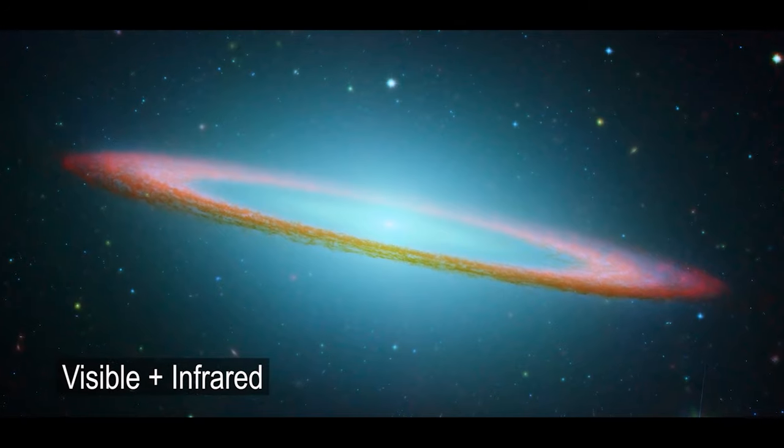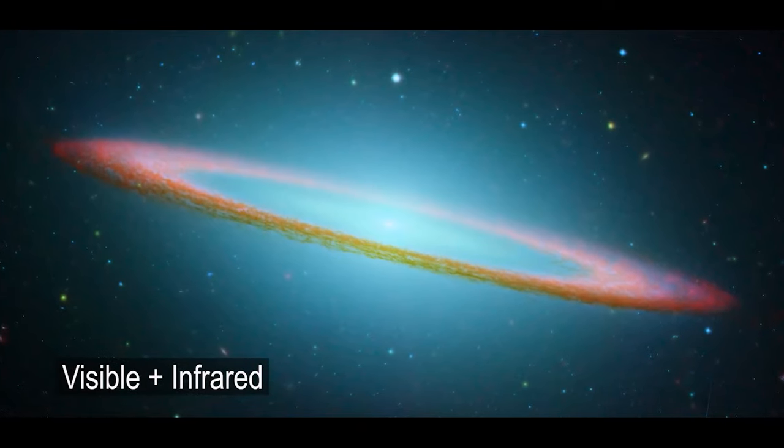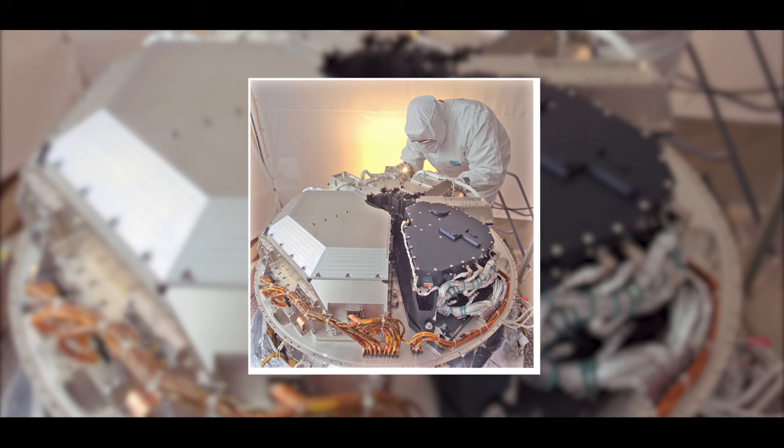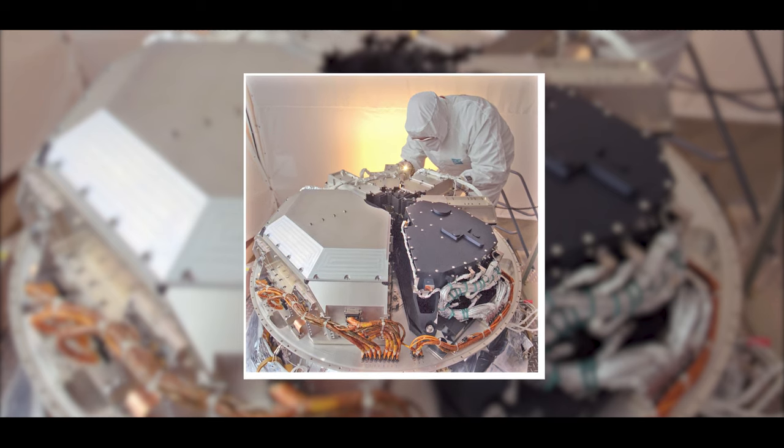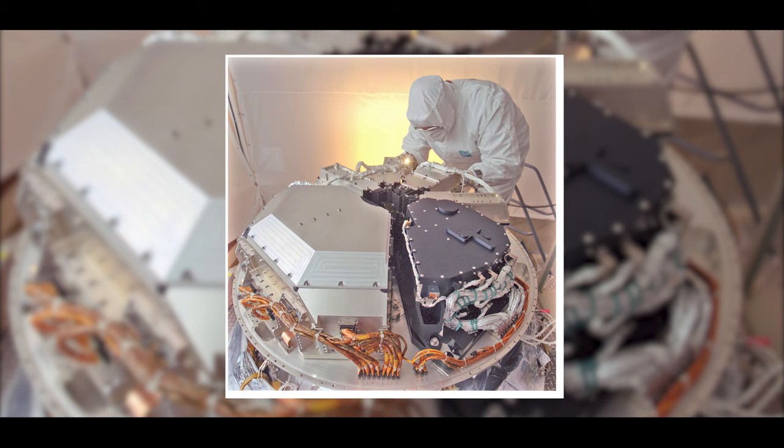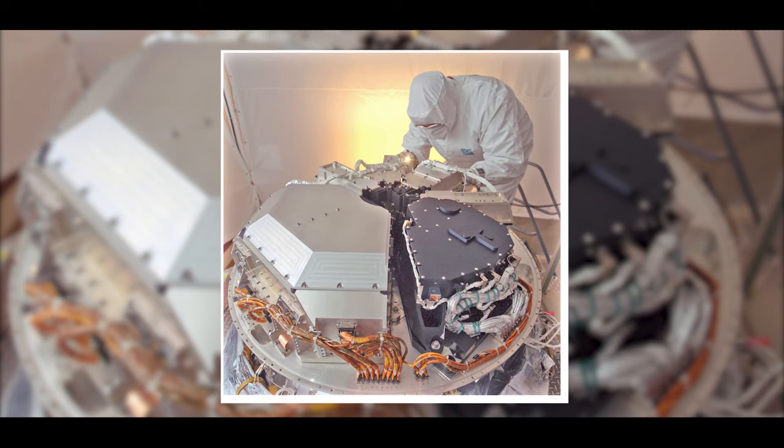IRAC had four detectors, each tuned to very specific wavelengths, and with a resolution of 256 by 256 pixels. The shorter wavelength detectors were made of indium and antimony, while the longer wavelength detectors were treated with arsenic. The only moving part of this instrument was the shutter, but it was not used in flight.